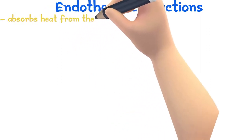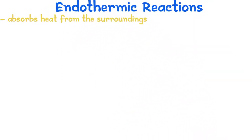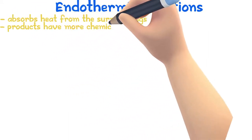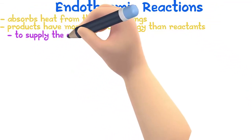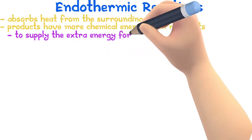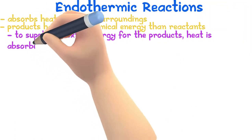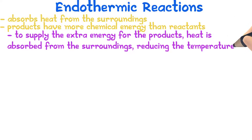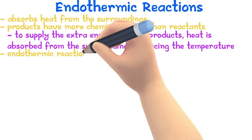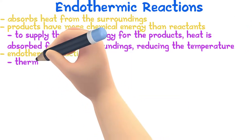A reaction that absorbs heat from the surroundings is called an endothermic reaction. For endothermic reactions, the products have more chemical energy than the reactants, so in order to supply the extra energy, heat is absorbed from the surroundings and the temperature of the surroundings goes down. An example of endothermic reactions would be thermal decomposition.